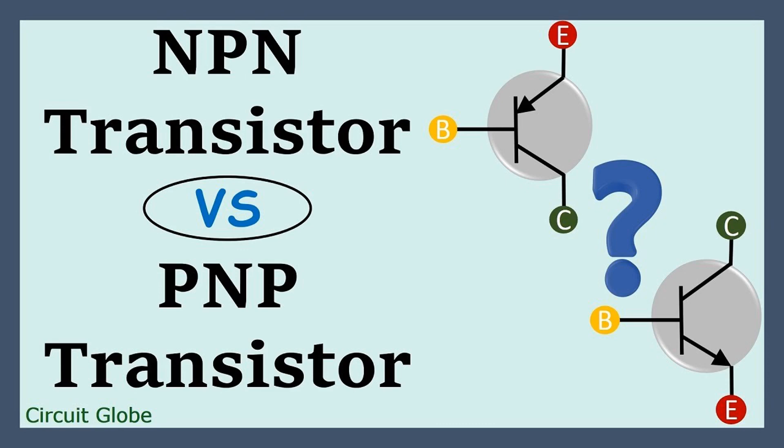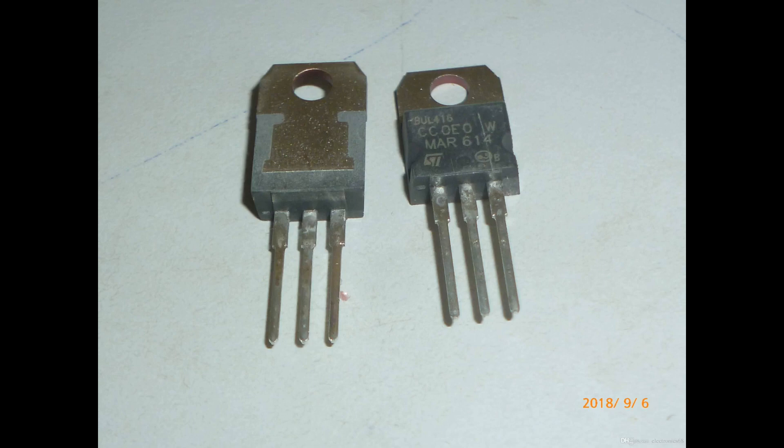Component Availability: The availability of NPN and PNP transistors may vary depending on the manufacturer and region, so designers should consider availability when selecting components. Component packages such as TO-92, TO-220, and SOD-23 are available, and the choice depends on size constraints, power dissipation requirements, and ease of mounting. Cost can also vary depending on performance specifications, brand, and package type — an important factor in high-volume manufacturing.